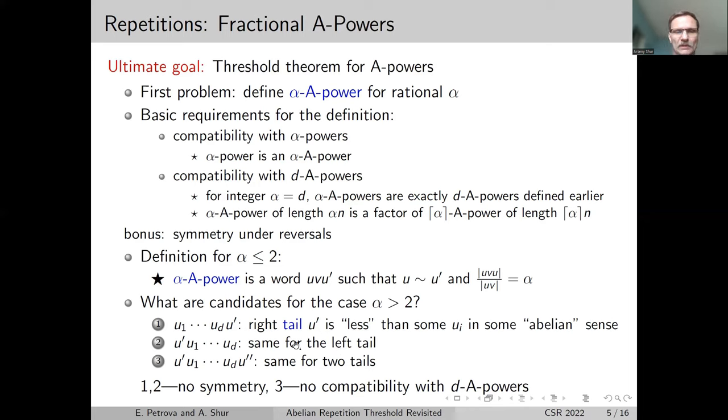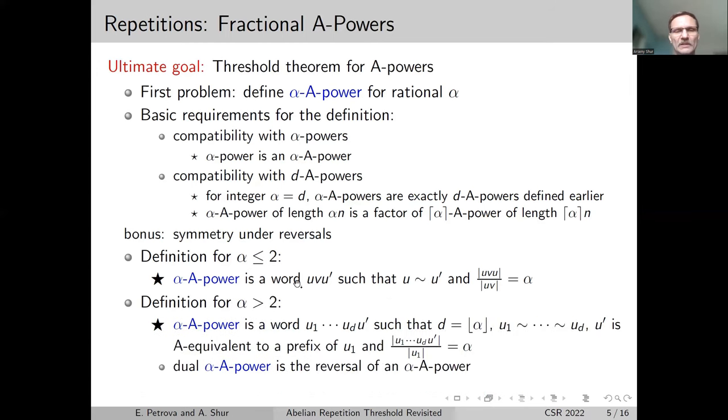We chose the definition which is compatible with the definition for small α. For us, an α-A-power is a word of this form, where u₁ through u_d is a d-A-power, an integral abelian power, and u′ is A-equivalent to a prefix of u₁ of the same length, with the usual requirement for the length. In this case, we obviously have also a dual α-A-power as the reversal of an α-A-power, with the tail on the left.